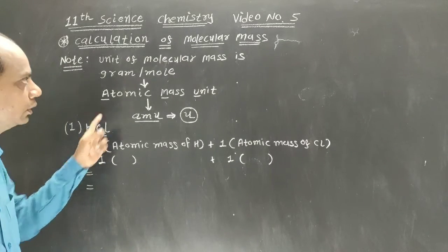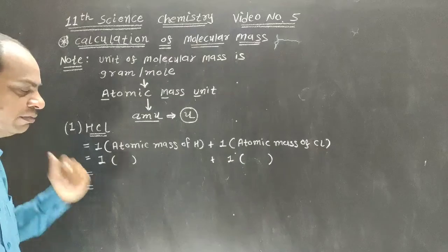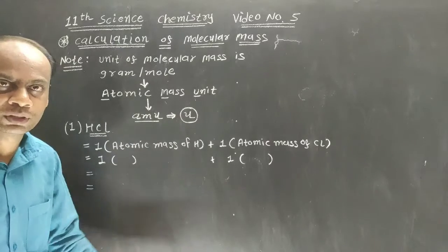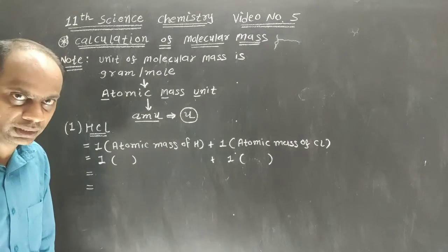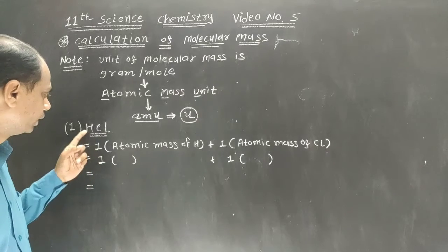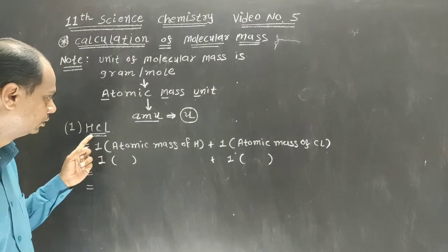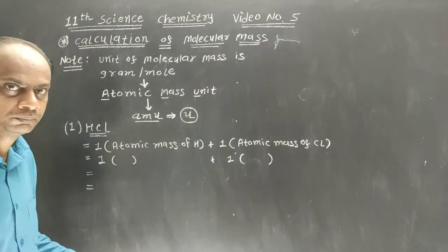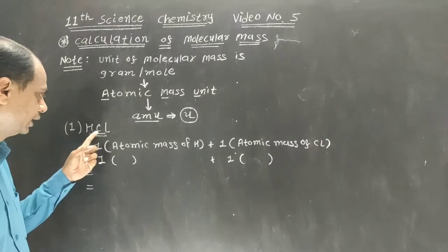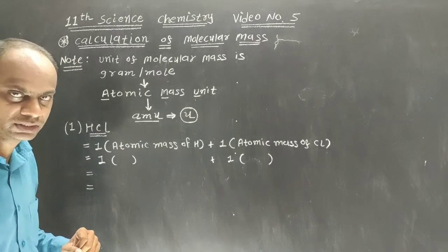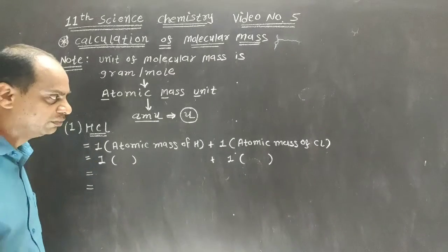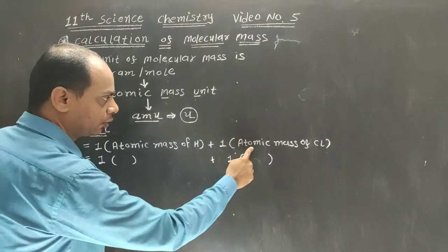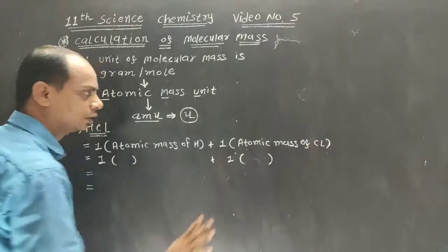Let's calculate example number 1: hydrochloric acid. Calculate the molecular mass of HCl. This is the common formula that is going to be used for all the examples we calculate today. The number of hydrogen atoms is only 1, so we write 1 in the bracket times the atomic mass of hydrogen, plus 1 in the bracket times the atomic mass of chlorine.